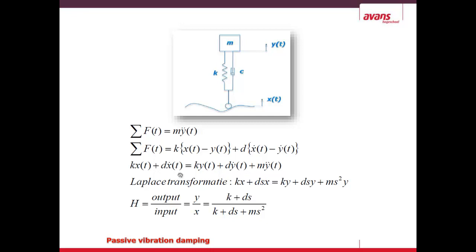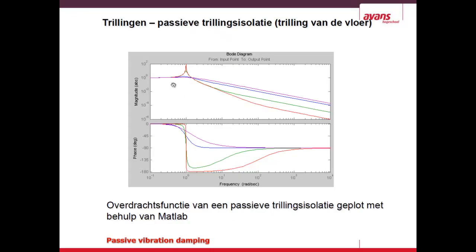After doing a Laplace transform — the easy way is to change every dot, meaning every differentiation above a variable, to a value of s. That's the simple version; there's a lot of advanced mathematics behind it. Then you get the transfer function, which is the output divided by the input, delivering this formula. This happens to be the exact same equation as for active vibration damping, but there the input and output are forces, whereas here they are distances.